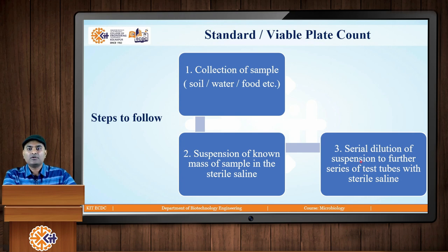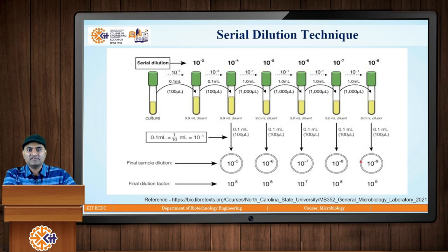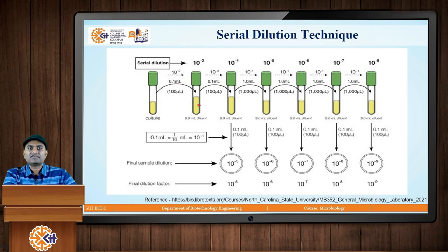Let us understand how serial dilution is performed in the laboratory with the help of the figure in this slide. The first tube is sterile saline of 10 ml. Assuming our sample is 1 gram of soil, the soil is suspended in this tube, which is our original culture. From this first tube, 0.1 ml (100 microlitres) is taken out and mixed aseptically in the second tube containing 9.9 ml of sterile saline, making the total volume 10 ml. Because 0.1 ml is the 100th part of 10 ml, this dilution becomes 10 raise to minus 2, and the dilution factor is 10 raise to 2.